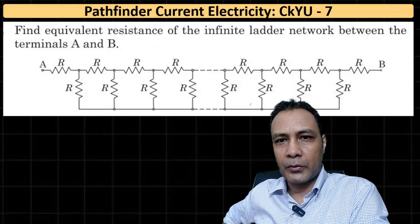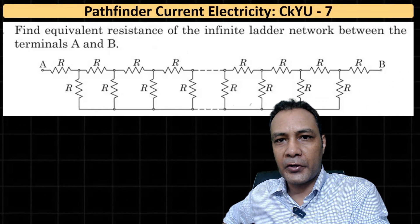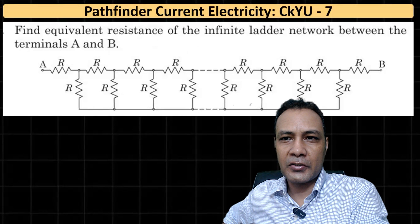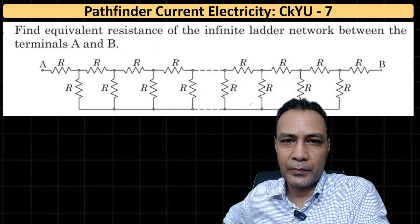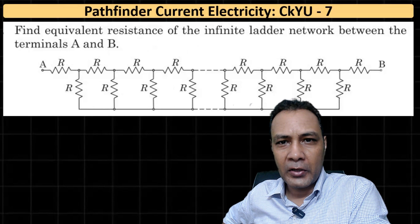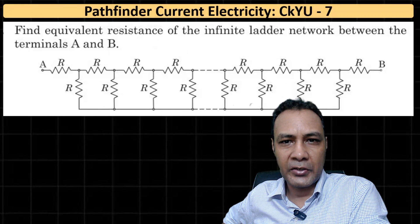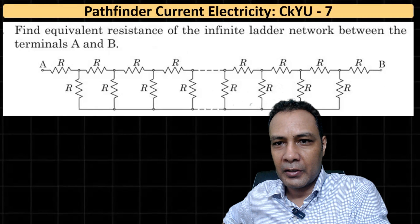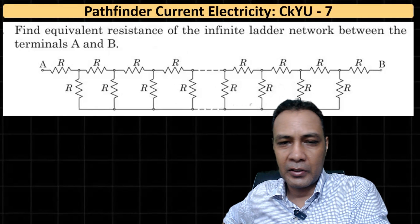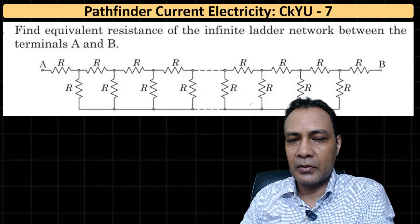Hey all, welcome to the Quantum Guru. Let's see this question of current electricity from Pathfinder. It's a check understanding question number 7. We have to find the equivalent resistance of the infinite ladder network between terminals A and B. This is the double infinite ladder.